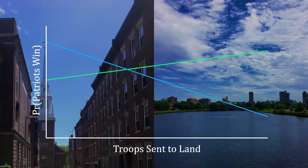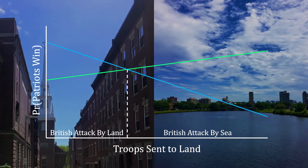Think about this from the British perspective. Using this figure, they can write down a plan of action. Specifically, this cut point — where those two probabilities intersect — is critical to what the British want to do. If the number of troops sent to land is lower than that number, the British will want to attack by land, since the Patriots' probability of victory is lower. In contrast, any allocations to the right of that dashed line are situations where the British prefer to attack by sea.